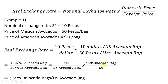So let's do an example. Example one: the nominal exchange rate between the dollar and the Mexican peso is one U.S. dollar equals 10 pesos. In Mexico, the price of avocados is 50 pesos per bag. In the U.S., the price of avocados is $10 per bag.